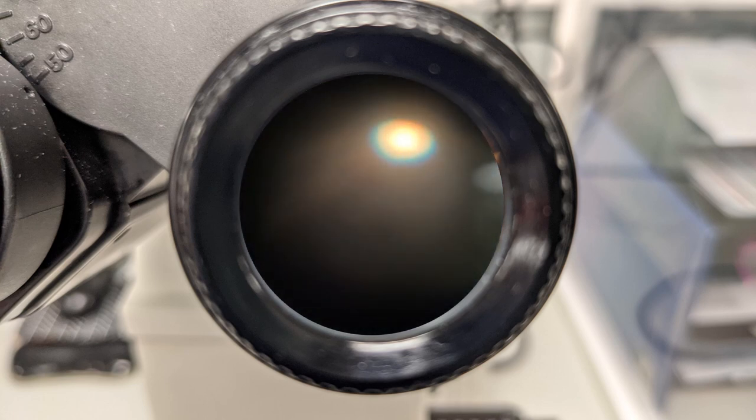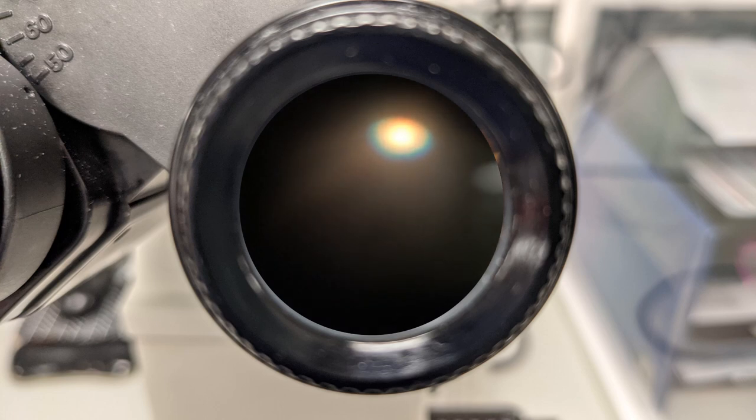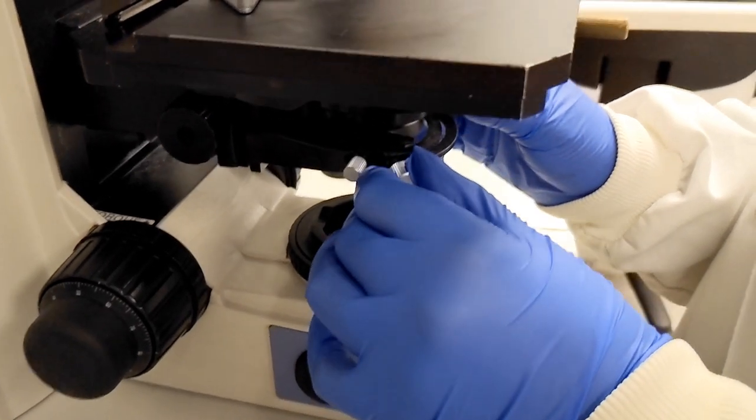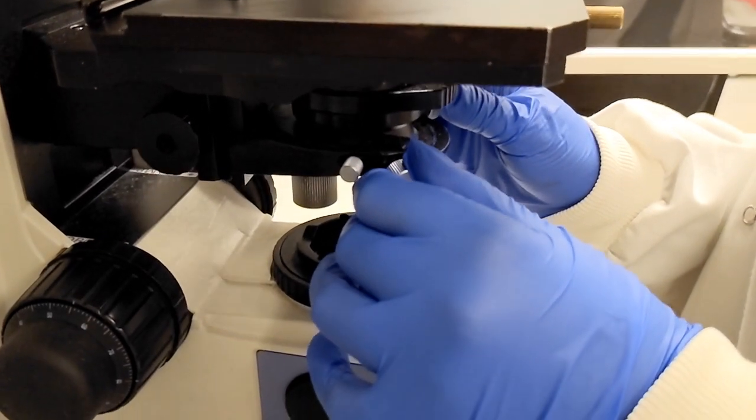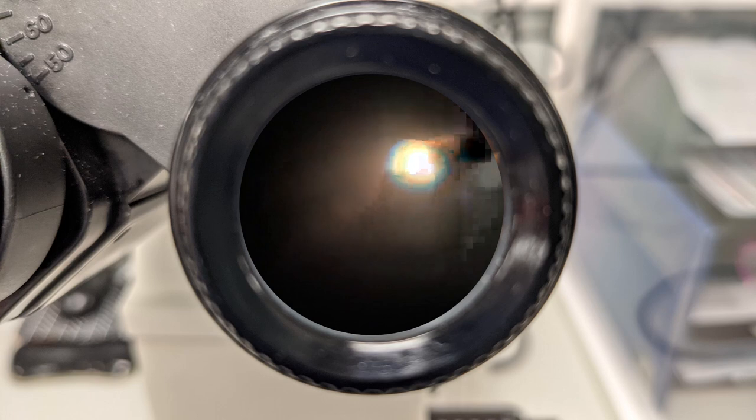As the diaphragm is constricted, it is obvious that the condenser is not centered properly. The centering knobs on the microscope condenser mounting frame are used to center the condenser. The two knobs drag the condenser diagonally so you can fine-tune its position.